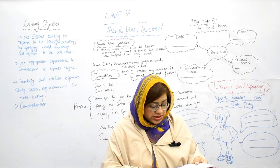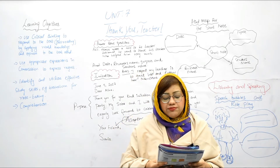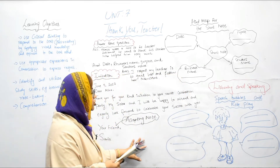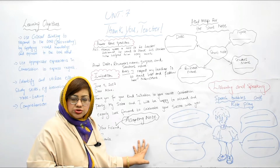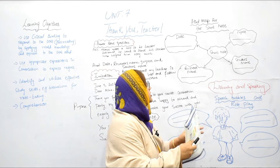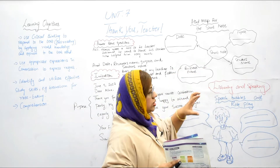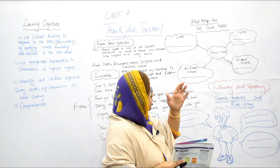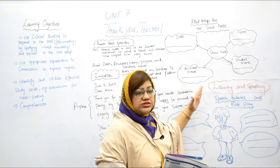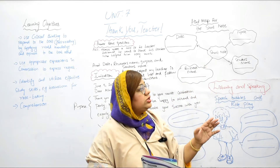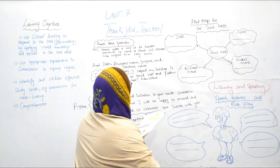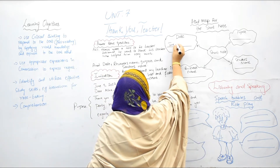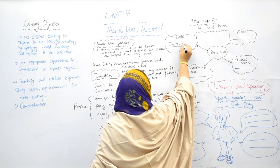On page number 72, fill in the mind map for the short note you have just read. The important features are: the date, the purpose, the receiver's name, and the sender's name. In the mind map, the date bubble should be filled with June 9, 2017.